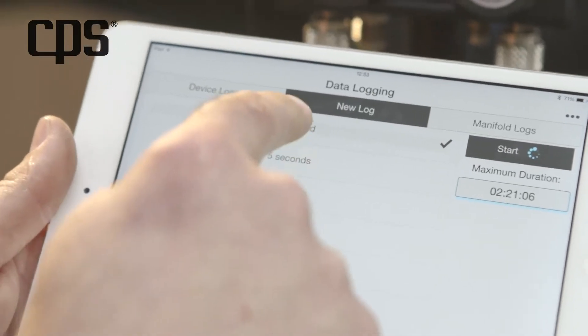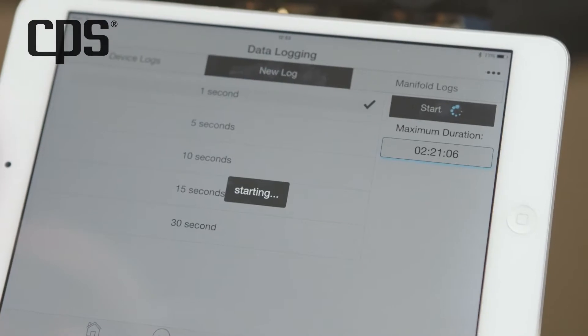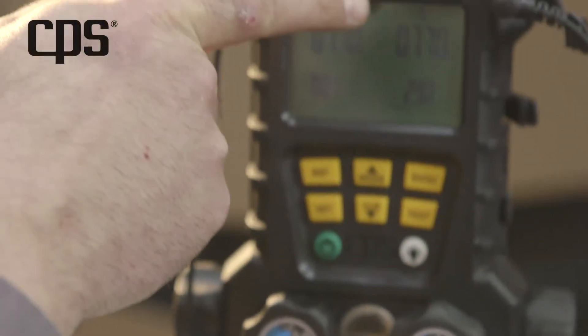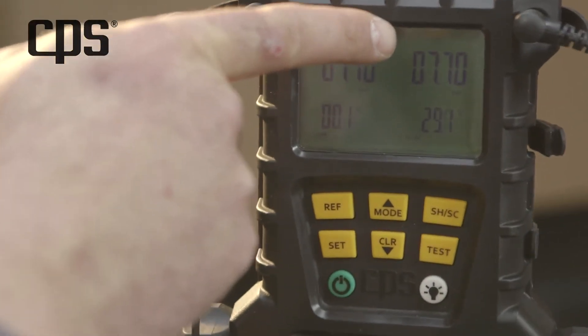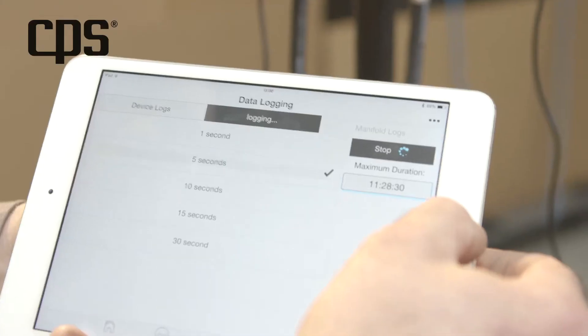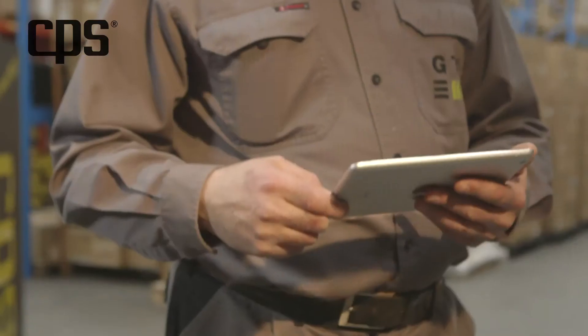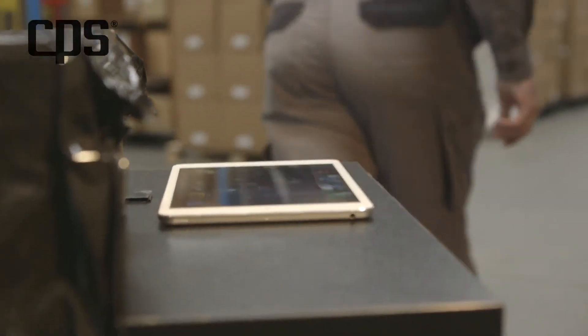When you start a new log, the manifold alerts you to what is happening. While logging, you can even turn off the application—the manifold will continue to collect information.